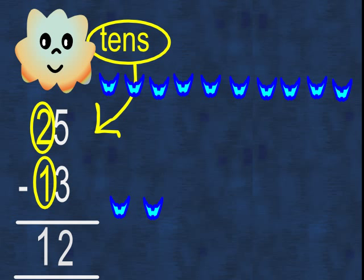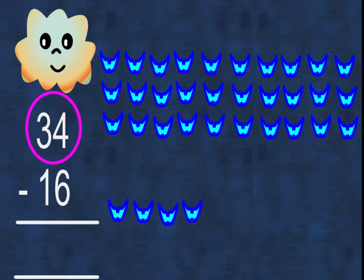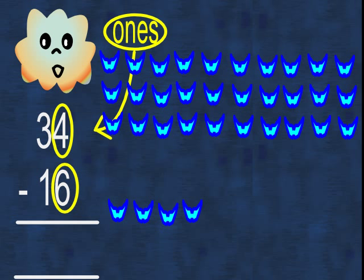Now let's look at 34 take away 16. Here are 34 birds. Again, we will start with the ones column, but we find that we cannot take six birds away from four birds.